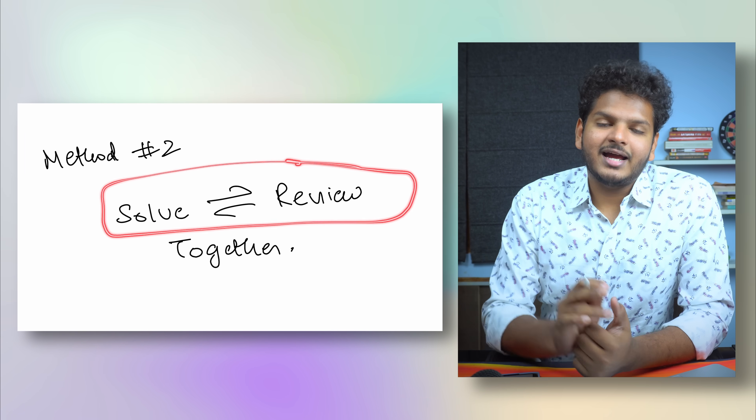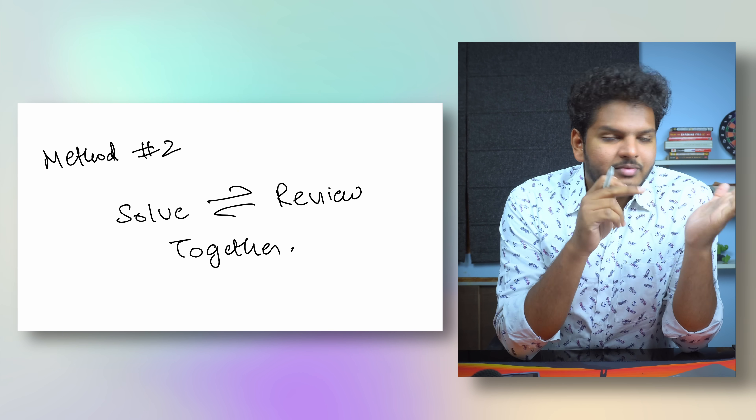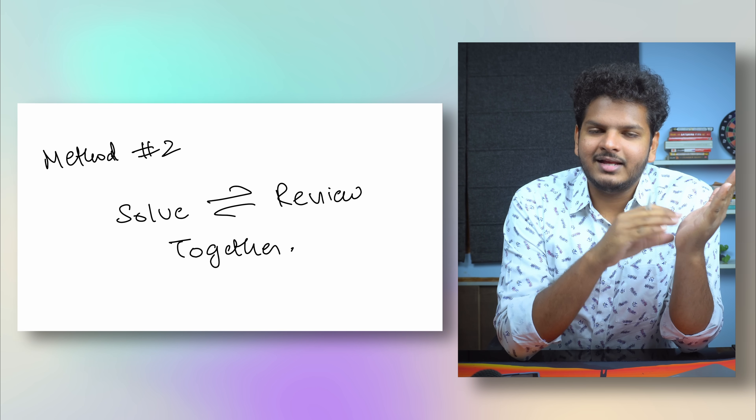Method 2 is 'solve and review together' — this is the most common method I suggest to anyone starting to solve previous year questions. You solve a question and immediately read the answer and explanation, which corrects your understanding right then and there. This is what most people do when solving any question bank. However, the problem is that if you solve 200 questions today and I ask you three weeks later, you'll likely get confused at the same point again. So this method is good short term but fails in the long run.